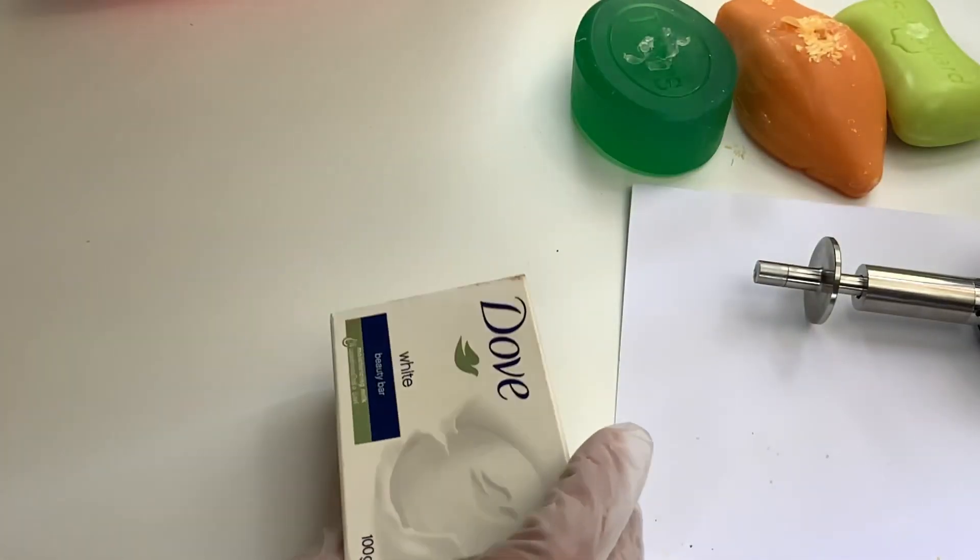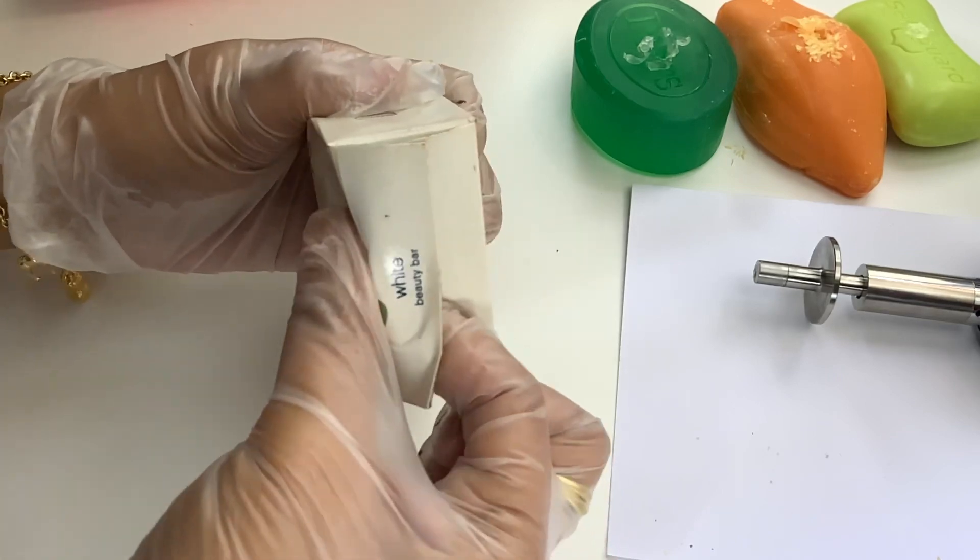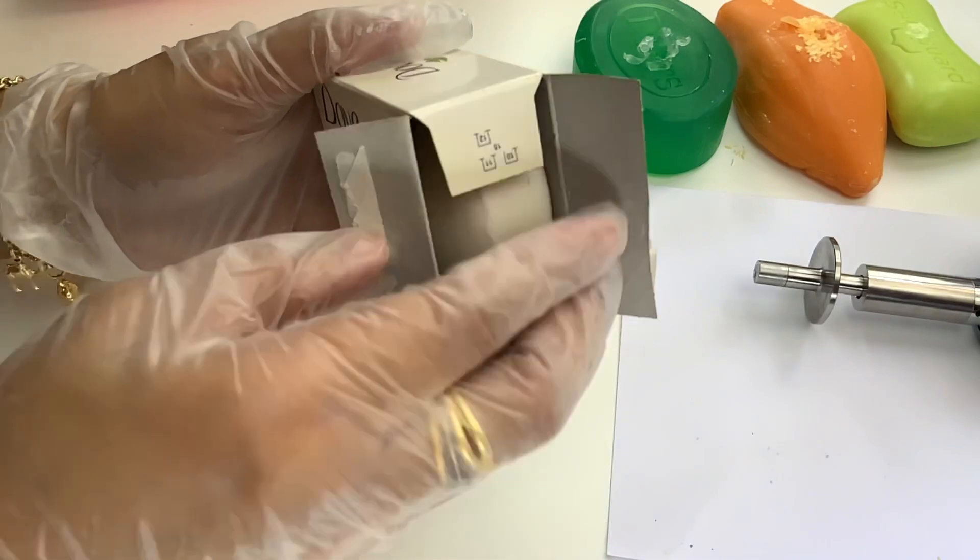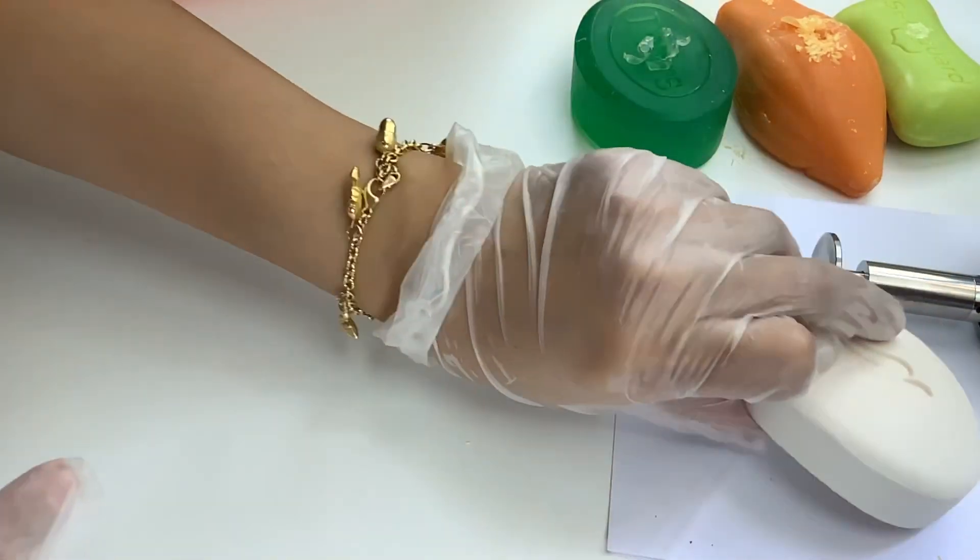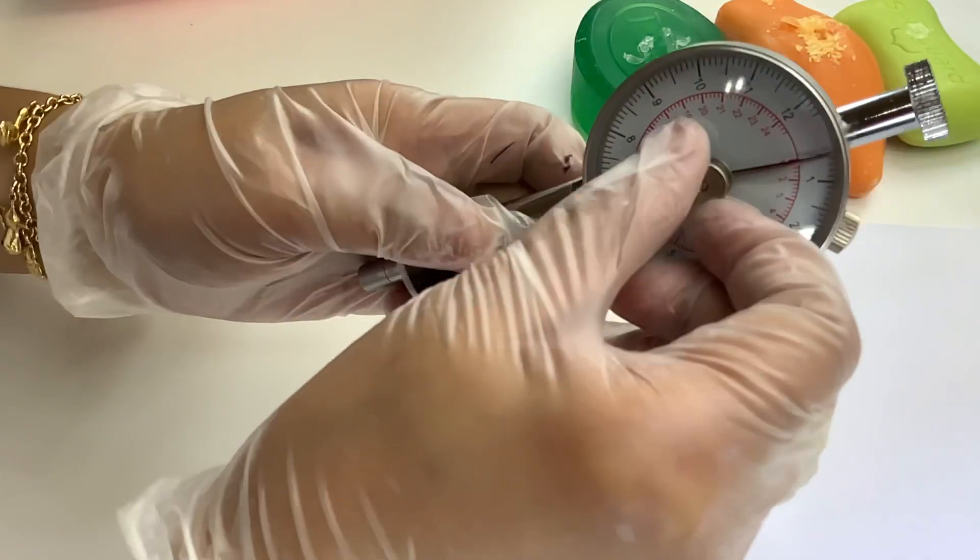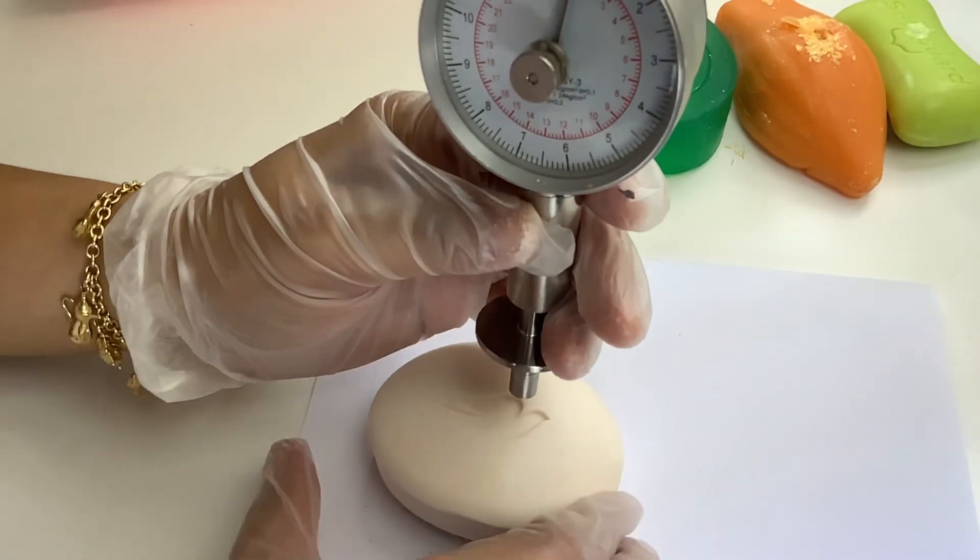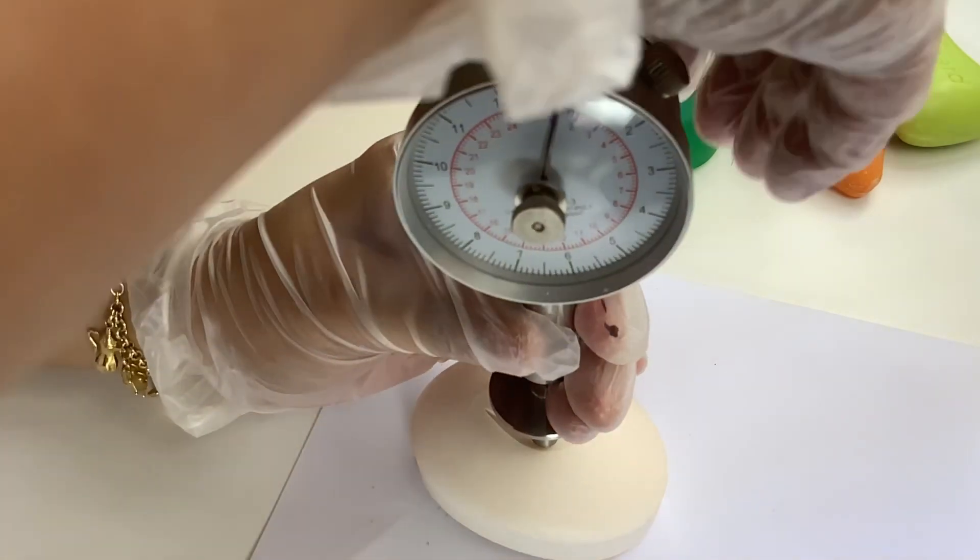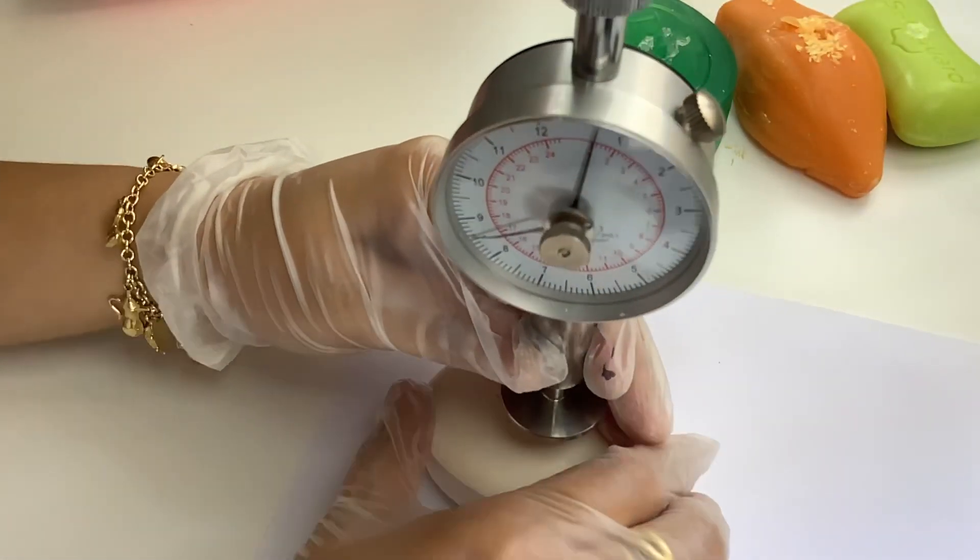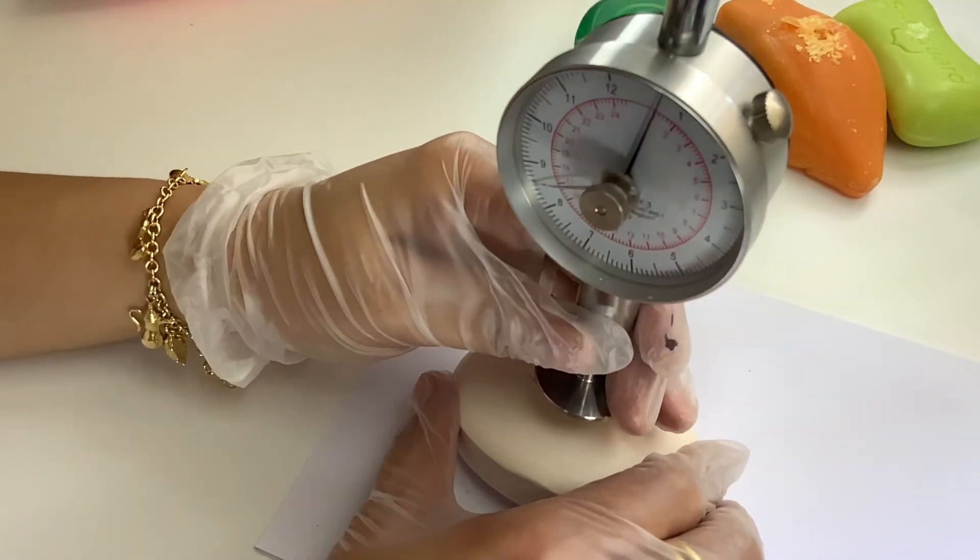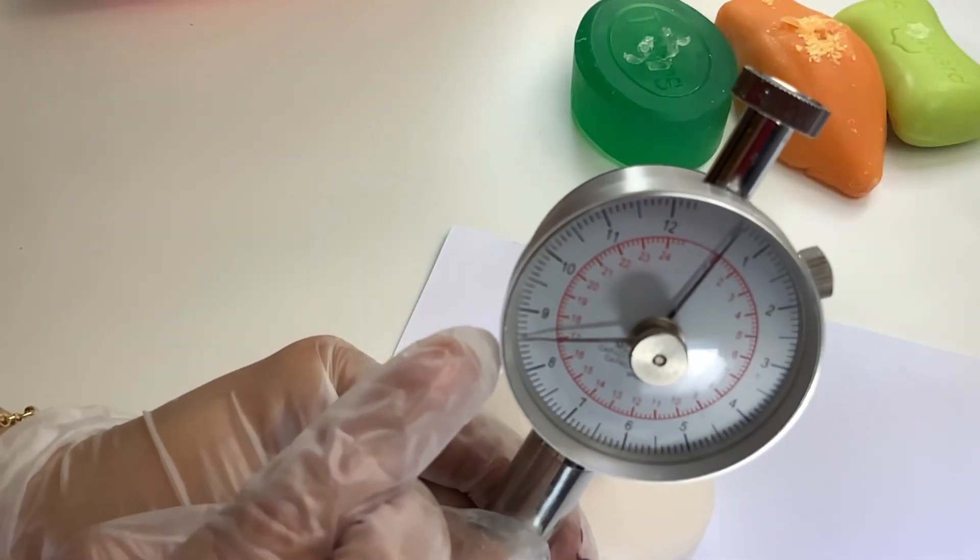Let's move to Dove white beauty bar. They claim that this contains one-fourth moisturizing milk. Main ingredients are stearic acid, sodium palmitate, lauric acid, sodium stearate, sodium palm kernelate. All the soaps that I mentioned here and will mention here contain other ingredients but I am focusing on sharing with you the fatty acid components because I feel that is more important to us when making our own handmade soaps. 17.